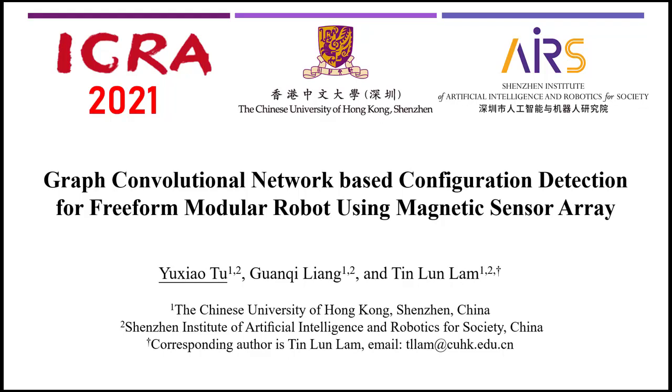In this video, we will introduce a configuration detection system for a freeform modular robot called FreeBot. A magnetic sensor array and graph convolutional network-based localization algorithm is applied to locate the connection points of other connected FreeBots.